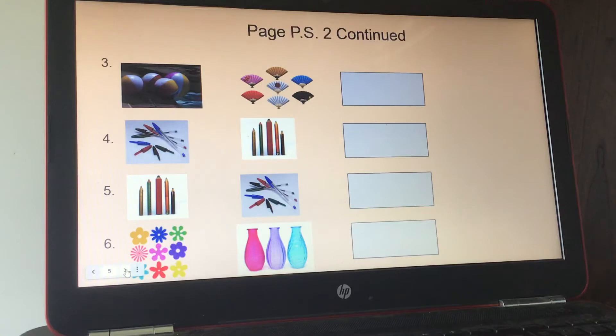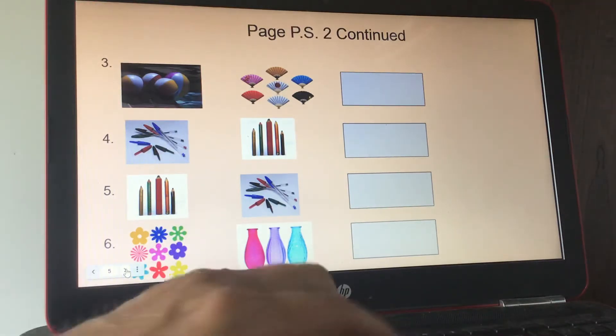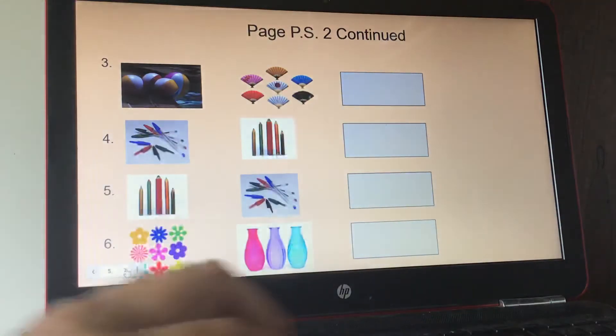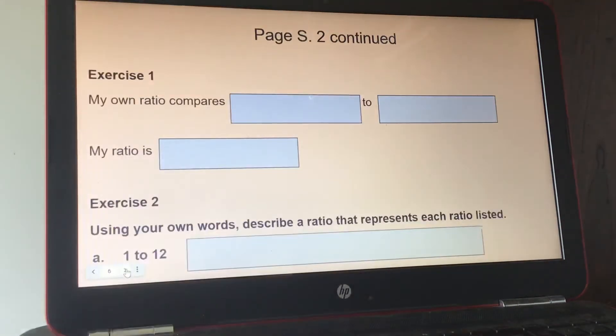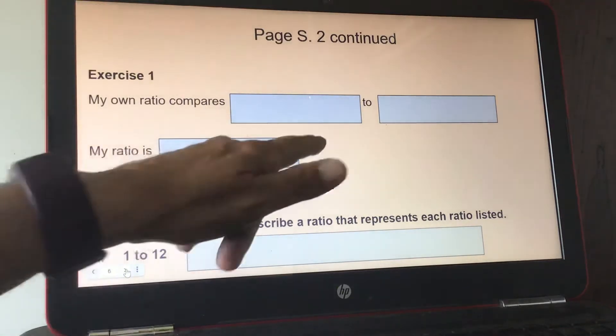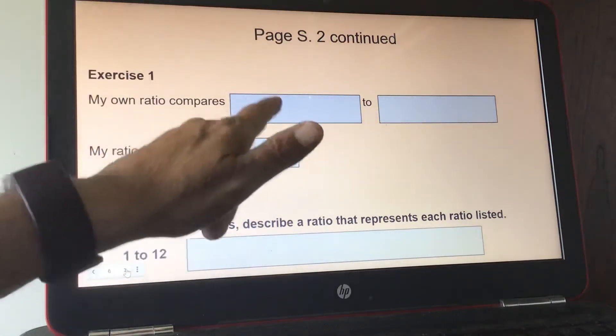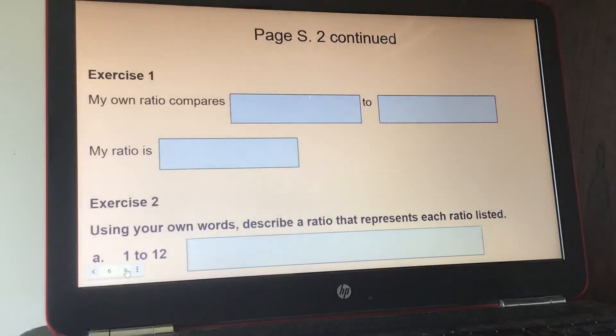Page 2 continued. So go through these and just put your answers in the boxes. Exercise 1, it says, My own ratio compares blank to blank. My ratio is blank. So you're going to make up your own. You could say 2 flowers to 1 vase and 2 to 1. Don't use my example. Use your own.